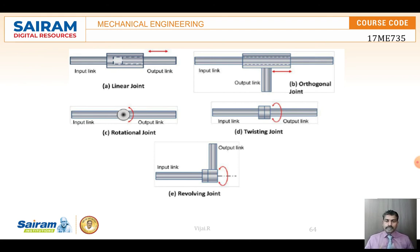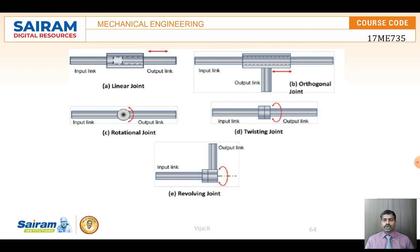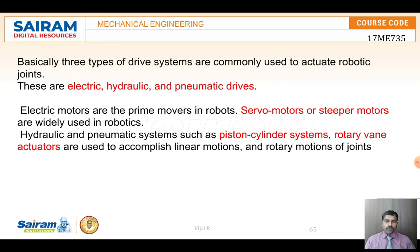The types of joints are: a linear joint, where the input and output links move in a linear motion; an orthogonal joint, where the input and output links are perpendicular to each other; a rotational joint, which allows rotation between input and output; a twisting joint, which allows a twisting or torsional motion like a coupling effect; and a revolving joint. Different types of joints are used depending on the process requirements.